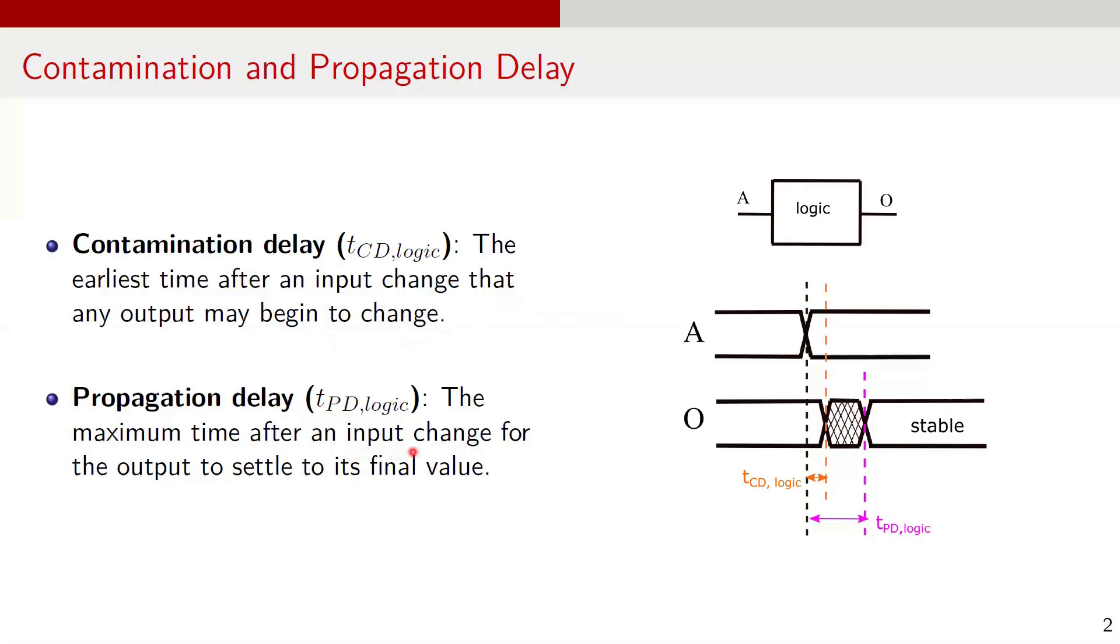For example, let's say input A changes from high to low or vice versa. Over here, we don't care about the logic level. We are only interested that it changes, not what its value is. In response to the input, the output O changes. It may begin to respond to the input after a time duration, that is contamination delay, denoted as T-sub-CD logic, and eventually settles to a correct final value within T-sub-PD logic, which is the propagation delay.